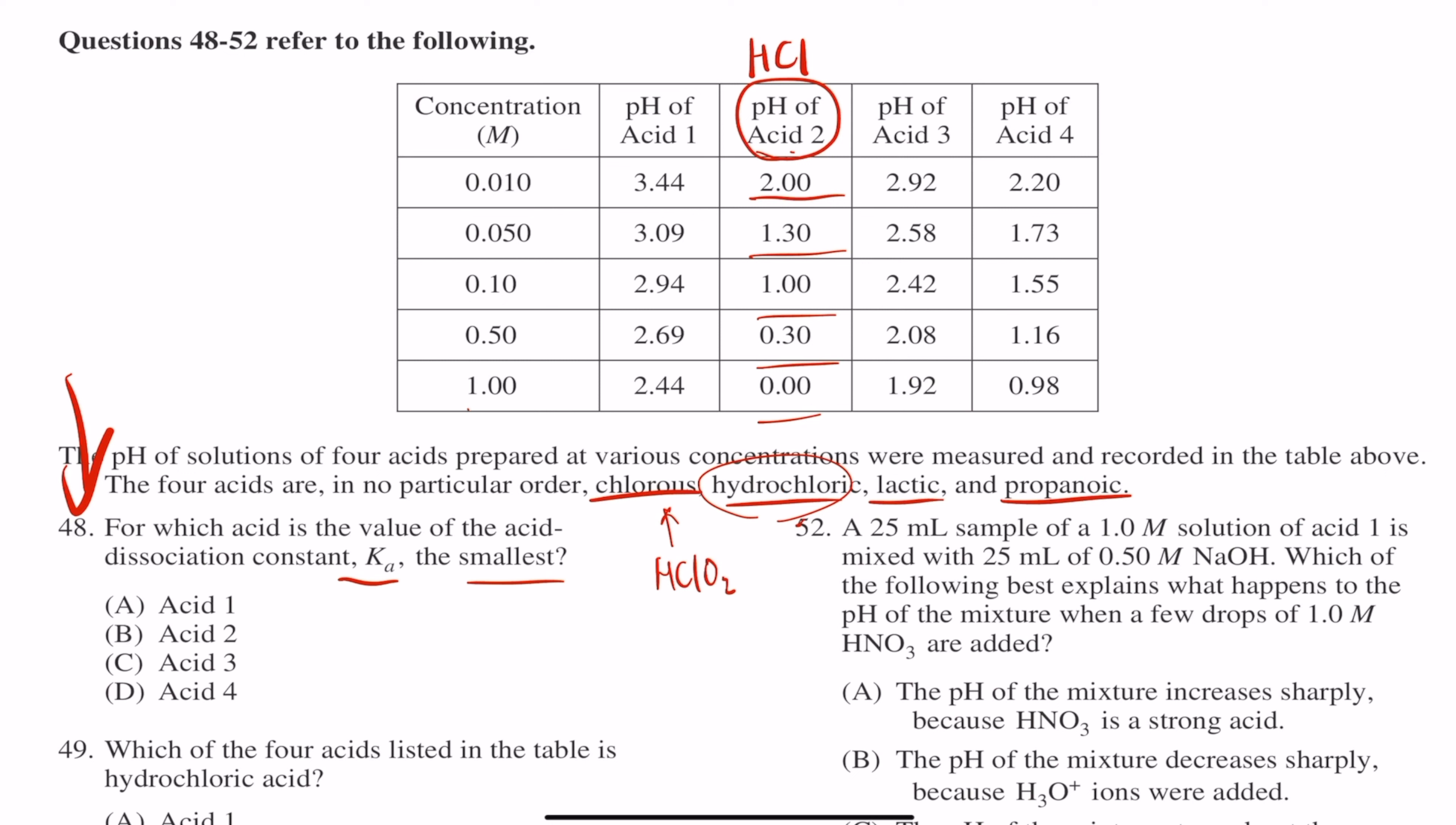So basically, when they're saying Ka is the smallest, they're talking about how the acid is the worst, whatever that acid is, is the worst in terms of dissociating.